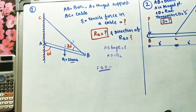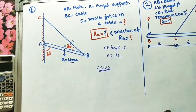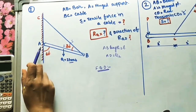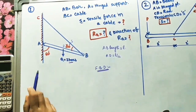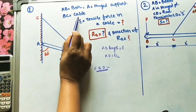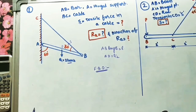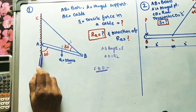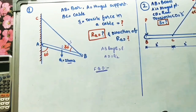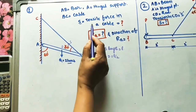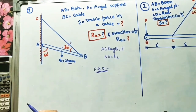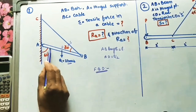We will solve some engineering mechanics problems. Take the first one: AB is the bar, A is the hinge support, and BC is the cable. This bar is making 60 degrees with the vertical, and this cable is making 30 degrees with the bar. S is the tensile force in the cable.